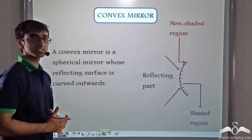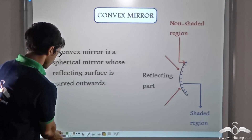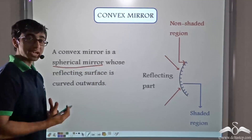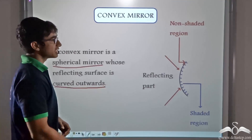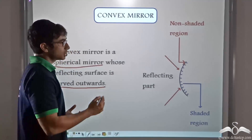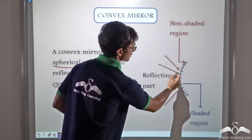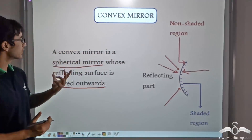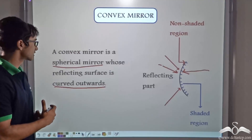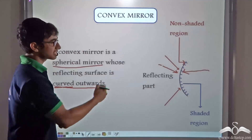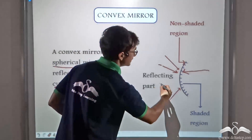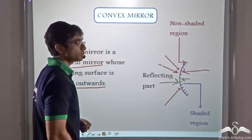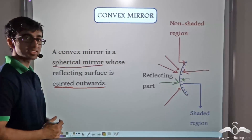So let us discuss convex and concave mirrors. What is a convex mirror? A convex mirror is a spherical mirror whose reflecting surface is curved outwards. If you consider the picture, you will notice that there are two surfaces. A convex mirror, as we just discussed, is the surface whose reflecting surface is curved outwards. As you can clearly see, this is the reflecting surface and it is curved outwards. The shaded region is the region which is silvered. So this mirror is a convex mirror.